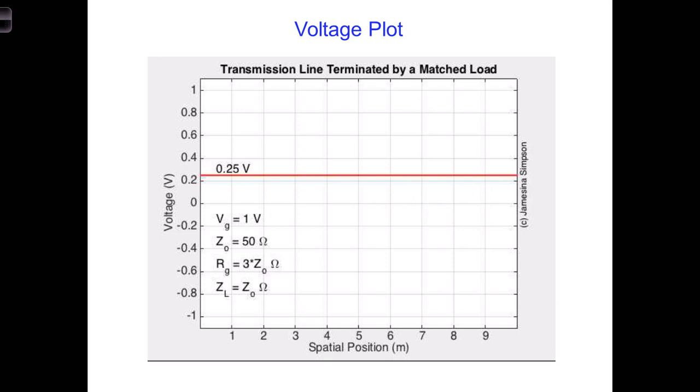Well, what does the battery see when the switch is closed? It sees Z-naught. So to know the amplitude of the initial voltage wave traveling down the transmission line, we must perform a voltage divider.